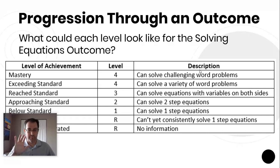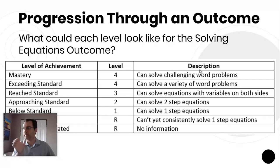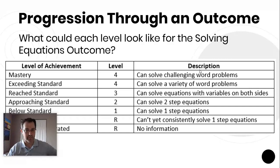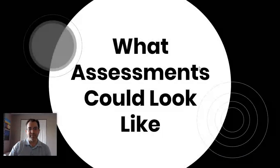Level 1 — the minimum standard to have passed this outcome — is being able to solve one-step equations consistently. Level 2 is two-step equations. Level 3 is variables on both sides, which feels like a pretty big jump. Word problems come after that, and for mastery I said can solve challenging word problems — also equations with variables on both sides but with brackets or collecting like terms. Basically mastery is any question that's at a good grade 9 level: this student would get it every time.